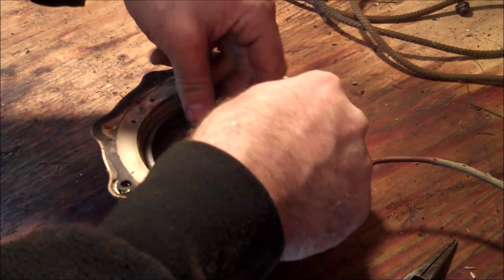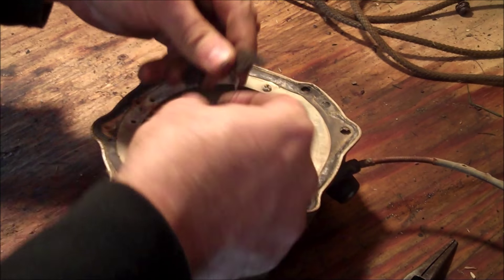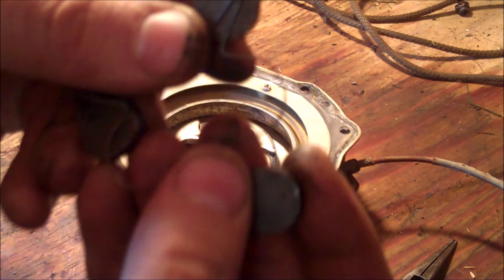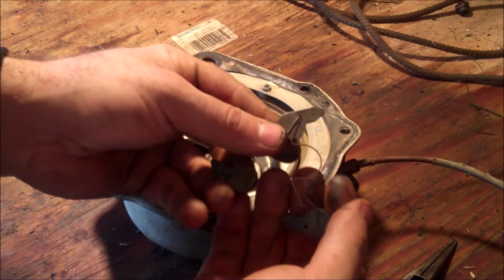Alright so this is the inside of the pull starter. You have a little circlip here and then a washer and then this protective plate and all these things come off and then we can expose the guts of the pull starter. So the plate comes off.